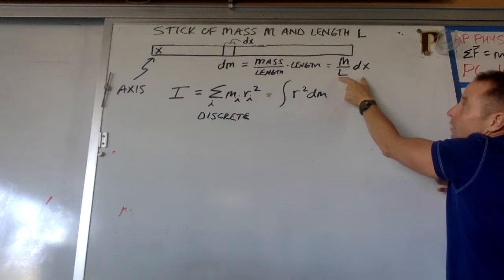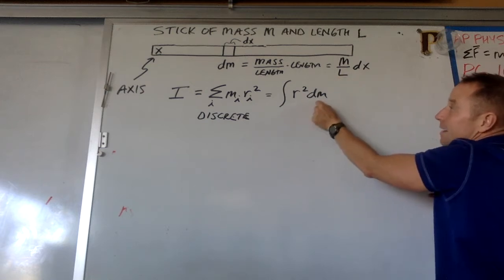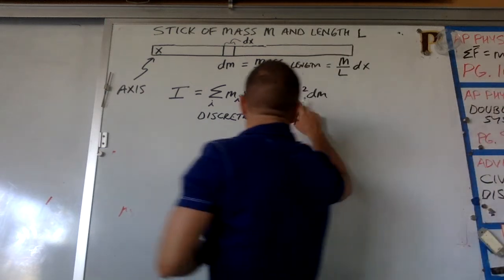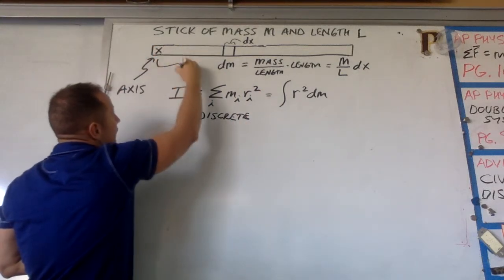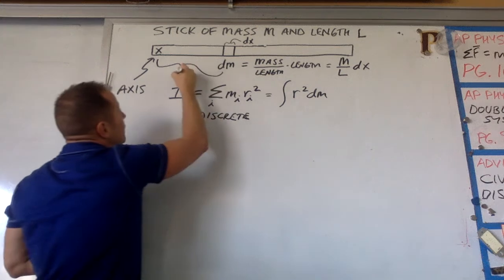And so what you would do is stick that in for dm. And then r, if you remember, is the distance from the axis to the point that you care about.